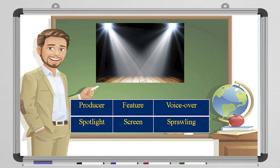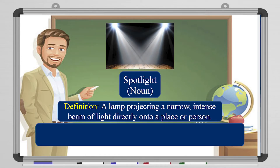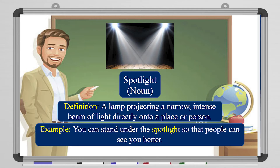So you have lights pointing at a specific spot. When the lights point at something like that, you are in the spotlight. 'Spotlight' is a noun — it is a lamp which projects a narrow intense beam of light onto a place or a person. The example: you can stand under the spotlight so that the people can see you better. Usually singers or actors on the theater stage stand under spotlights.